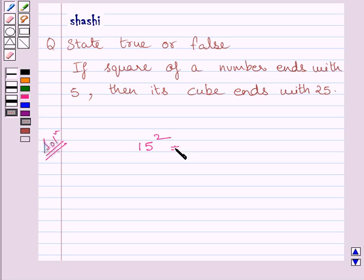It is equal to 15 multiplied by 15, that is further equal to 225. Now clearly you can see, square of 15 is ending with 5.